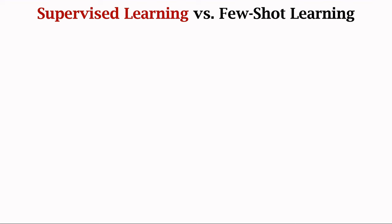Another commonly used dataset is Mini ImageNet. It has 100 classes such as mushroom, orange, corn, bird, and snake. Every class has 600 samples, and the dataset has a total of 60,000 samples. We have learned the basic concepts of few-shot learning and meta-learning.